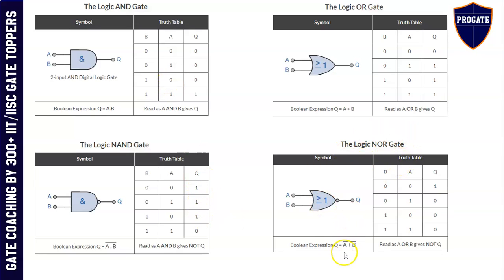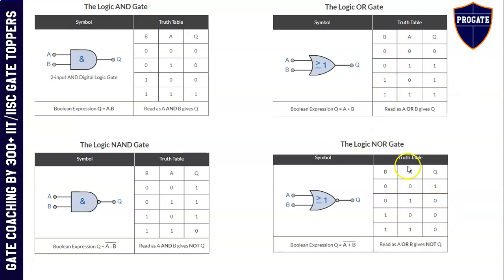Logical NOR gate. Expression: A plus B, whole bar. We pass the output of the OR gate through a NOT gate to get NOR — OR plus NOT is NOR. This is the NOR gate symbol; the bubble indicates the OR gate is followed by a NOT gate. If we see the truth table, output is high only when both inputs are zero. Otherwise output is zero — it is exactly opposite of the logic OR gate. If any one of the inputs is high, then the output will be low.